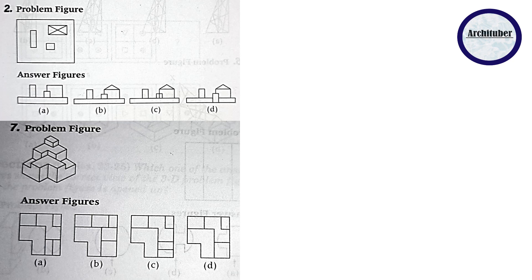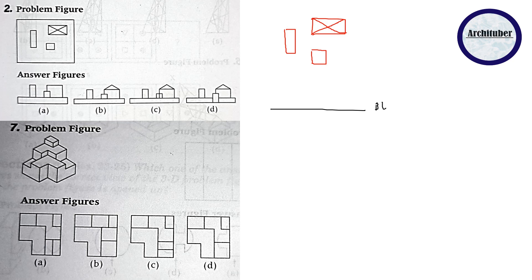In this question, you have been given a plan and we have to make an elevation out of it. When you have such questions, try to make it simply. We have a box here and a square here. When you have such a question, simply take projections — make a baseline or ground line and then take projections for each element.